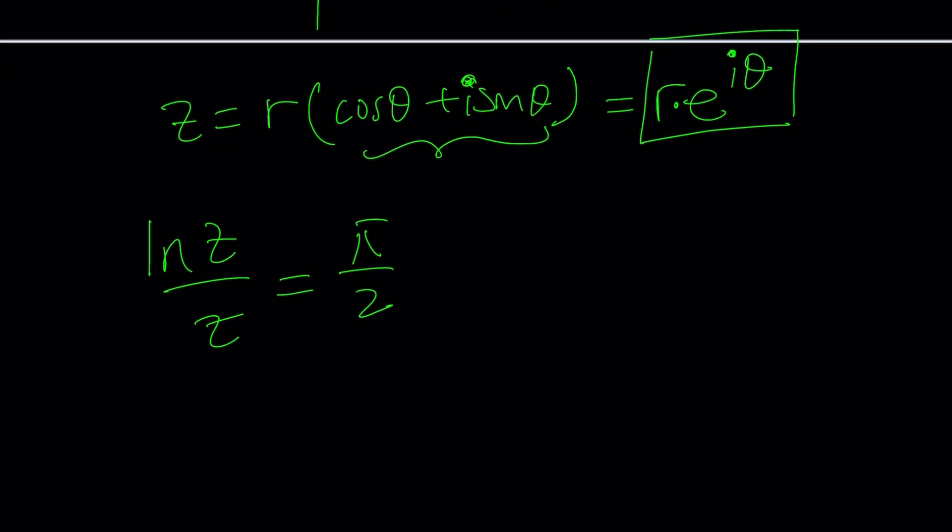I have a feeling that it's going to be good because look at this. This is exponential and I'm going to natural log it. So that should give me something nice. Let's find out. If you replace Z with R e to the iθ.